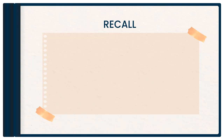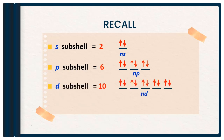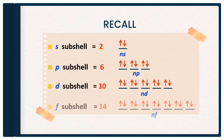Just to recall, the maximum number of electrons for each subshell is the same regardless of which shell it is in. For the s subshell, the maximum is 2 electrons. For p, it is 6 electrons. For d, it is 10 electrons. And for f, it is 14 electrons.